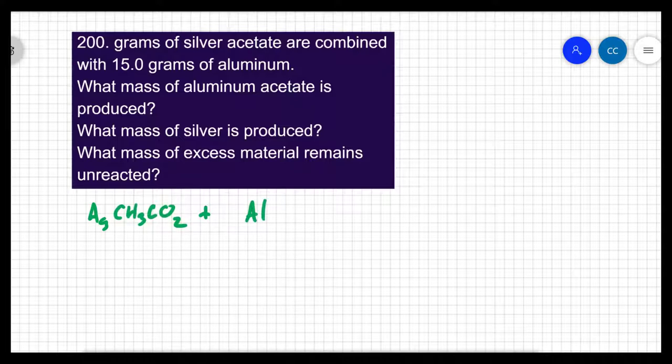So here's the setup for a single replacement reaction. The aluminum will come and knock out the silver and bond with the acetate, and the silver will be left by itself. We know this because the question is asking for the products aluminum acetate and silver.